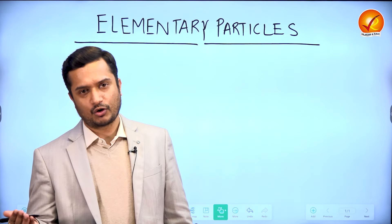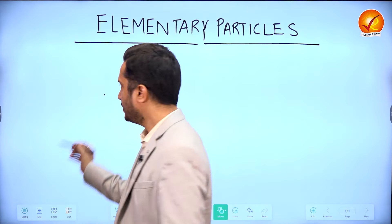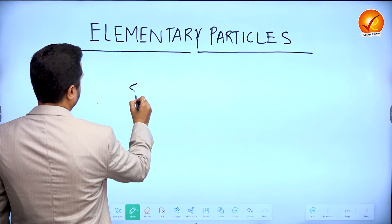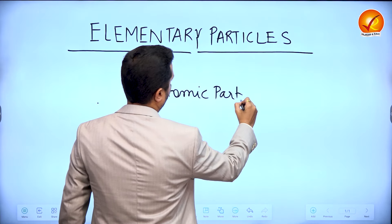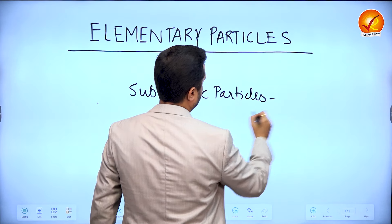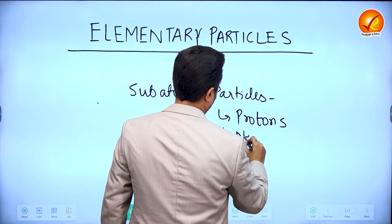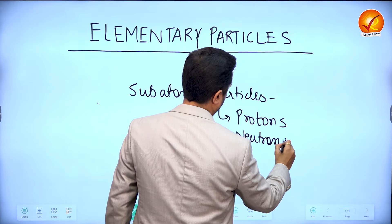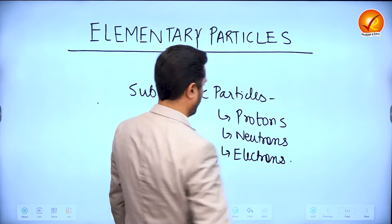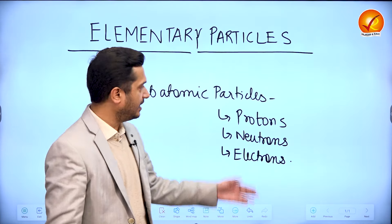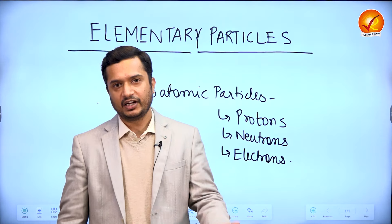But then later we got to know that the atom is further made up of still smaller particles, which we call subatomic particles — such as protons, neutrons, and electrons. After that we started believing that these protons, neutrons, and electrons would be the smallest particles and they would be indivisible.